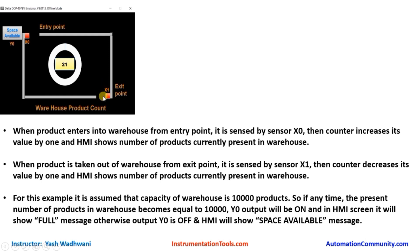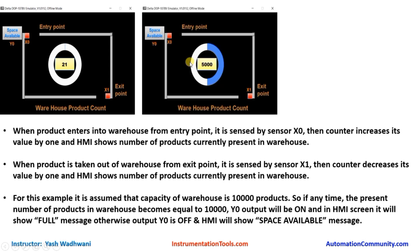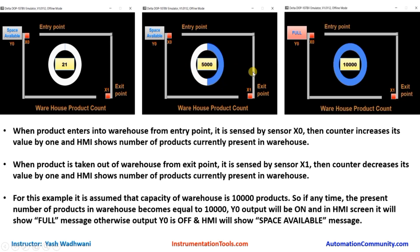Similarly, if the product leaves the warehouse from the exit point, the X1 sensor will sense the product and decrease the counter value by one, and again it will show the present number of products available in the warehouse. We have assumed that the capacity of the warehouse is to store 10,000 products. If the number of products becomes equal to 10,000, output Y0 will turn on, indicating that the space is full.